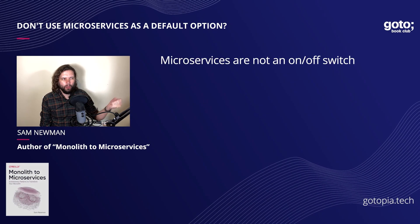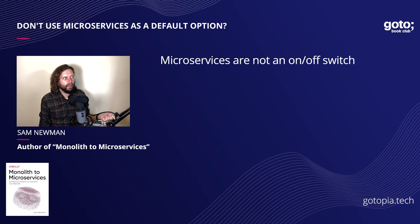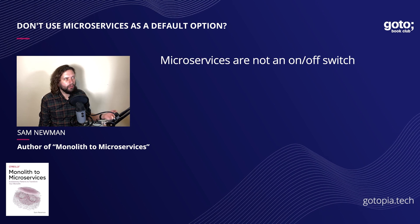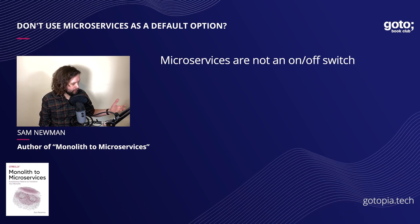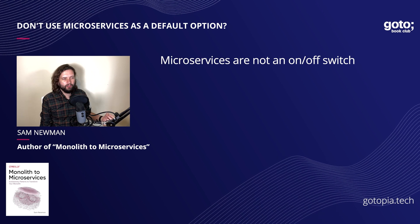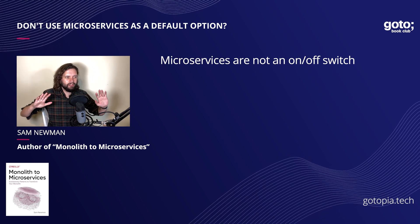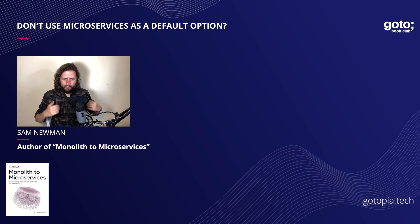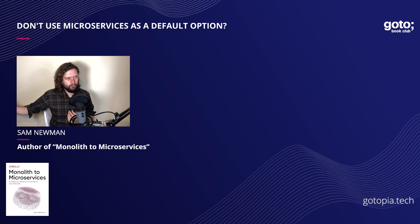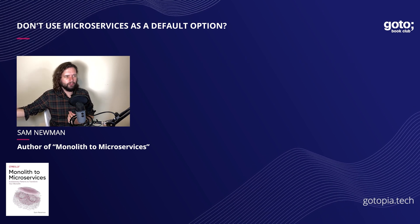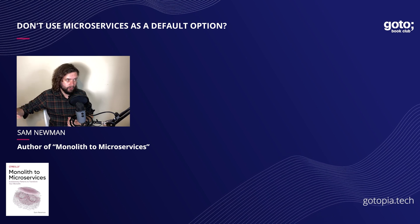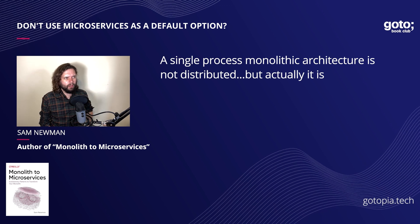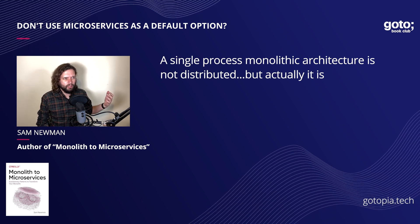Microservices aren't like an on-off switch. And people, partly often because we don't have time to engage with the topic more fully, like to very clearly delineate things and say this is this thing and this is that thing. We say microservice architectures are distributed systems and distributed systems are hard. And the phrase 'distributed systems are hard' is true. And a single process monolithic architecture is not distributed.